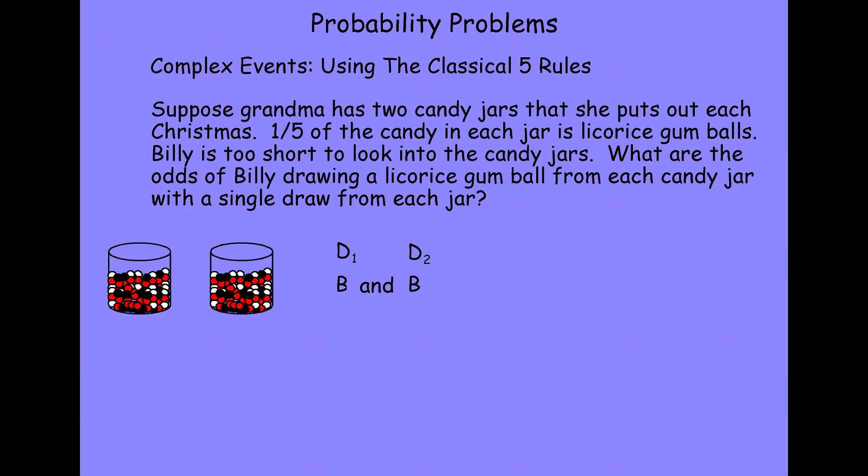Let's look at the odds of him grabbing a licorice gumball on the first. Since one-fifth of the candy in that first jar is licorice gumballs, we can use the classical theory of probability to estimate the probability of drawing a licorice gumball as one-fifth. That is, one-fifth of the candy in the jar is licorice gumballs, the principle of indifference holds, and so it's one-fifth. Same for the second.